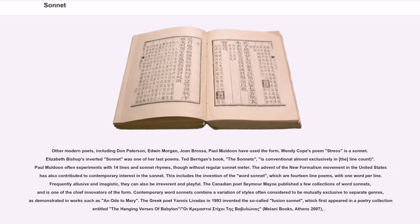Contemporary word sonnets combine a variation of styles often considered to be mutually exclusive to separate genres. The Greek poet Giannis Patilis in 1993 invented the so-called fusion sonnet, which first appeared in a poetry collection entitled The Hanging Verses of Babylon, published by Melanie Books, Athens 2007.